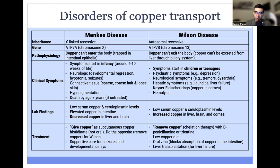These disorders differ in several ways. The inheritance patterns are different: Menke's disease is X-linked recessive, and Wilson disease is autosomal recessive. The genes are also different — ATP7A for Menke's and ATP7B for Wilson. In Menke's disease, copper cannot enter the body, causing copper depletion; in Wilson's disease, copper cannot exit the body, causing copper excess.